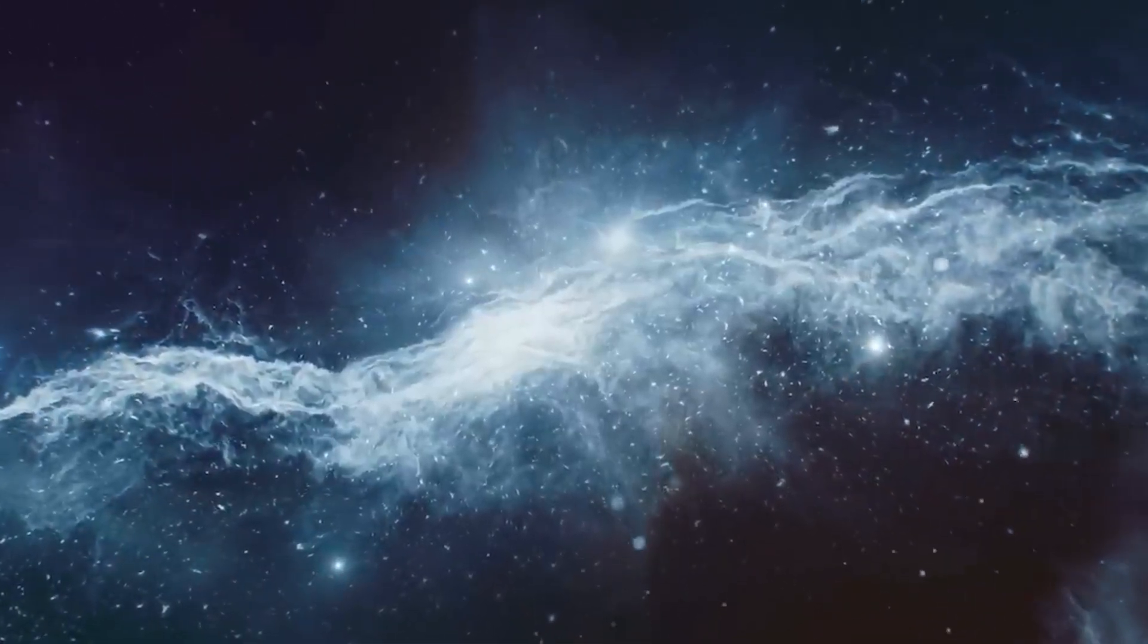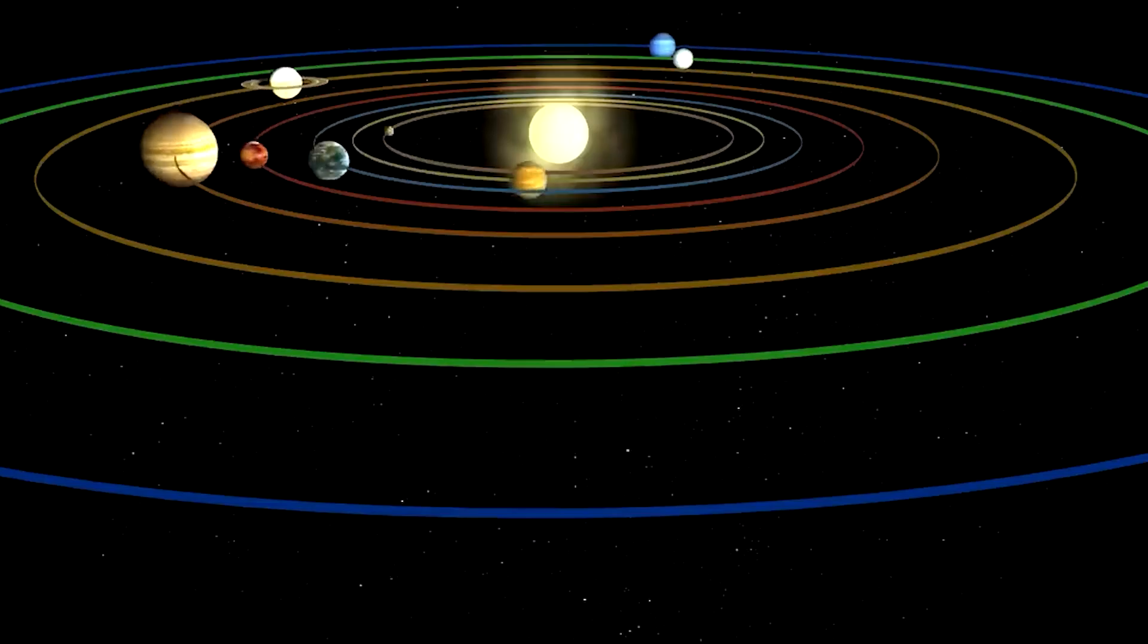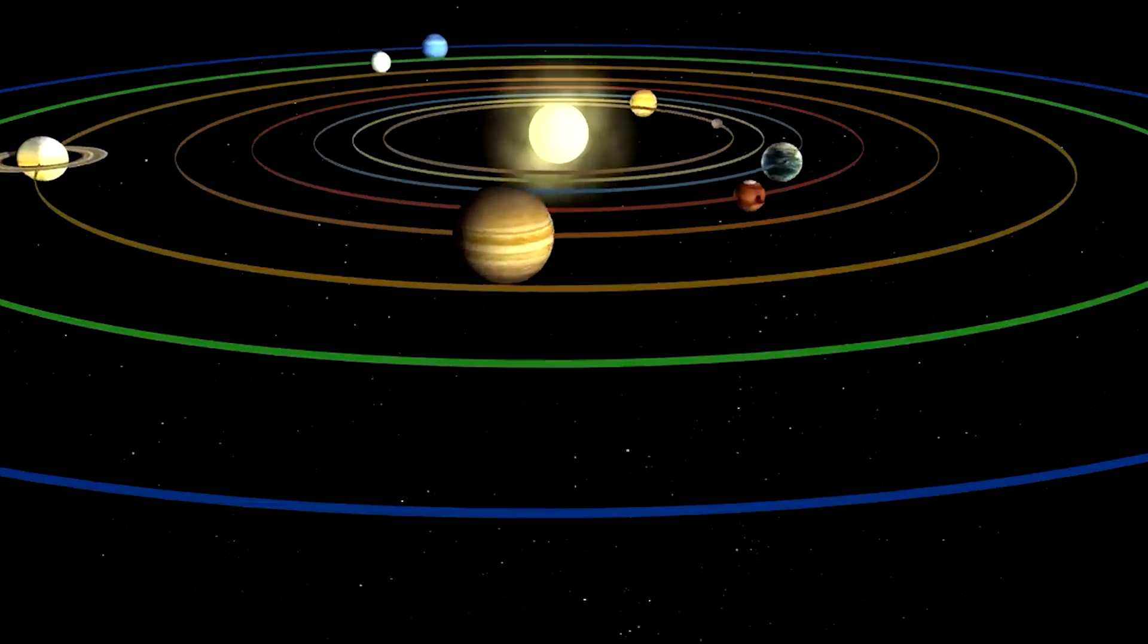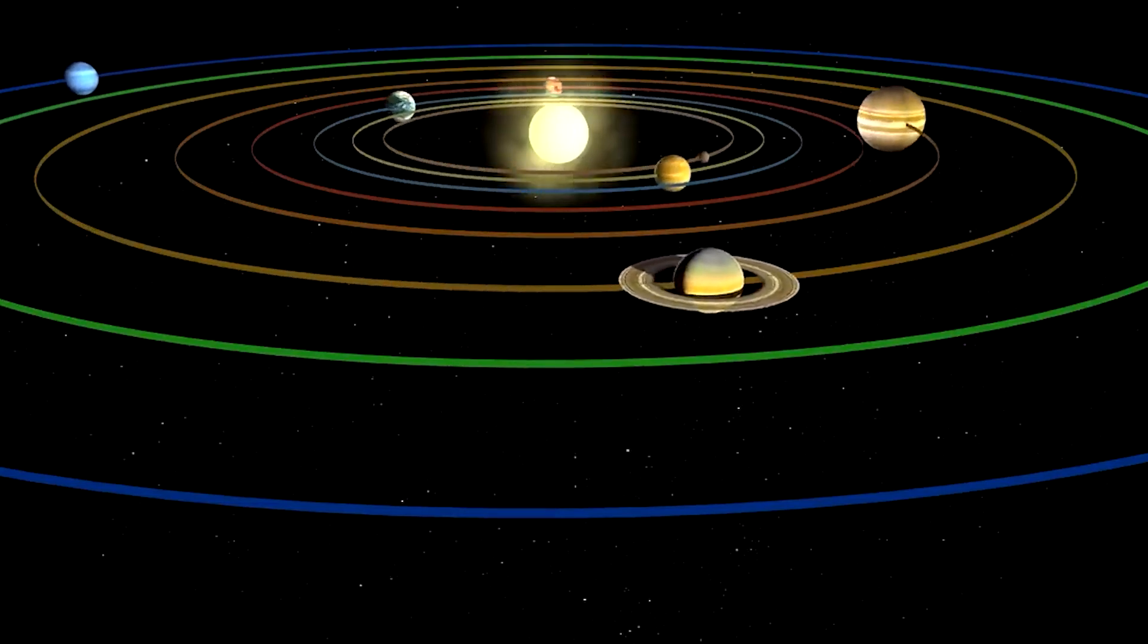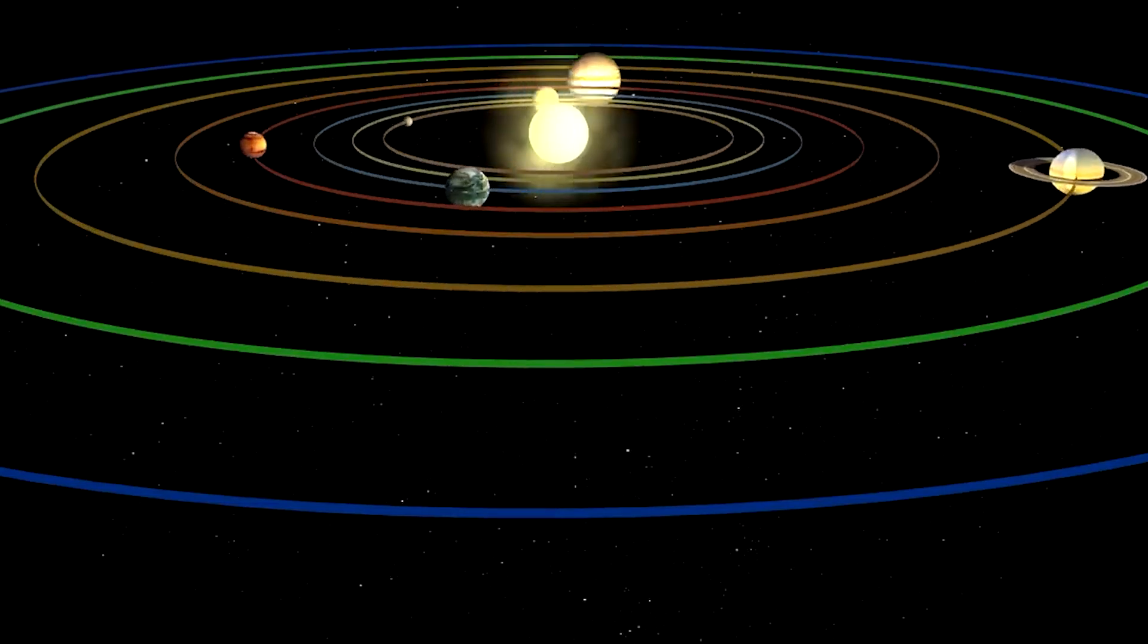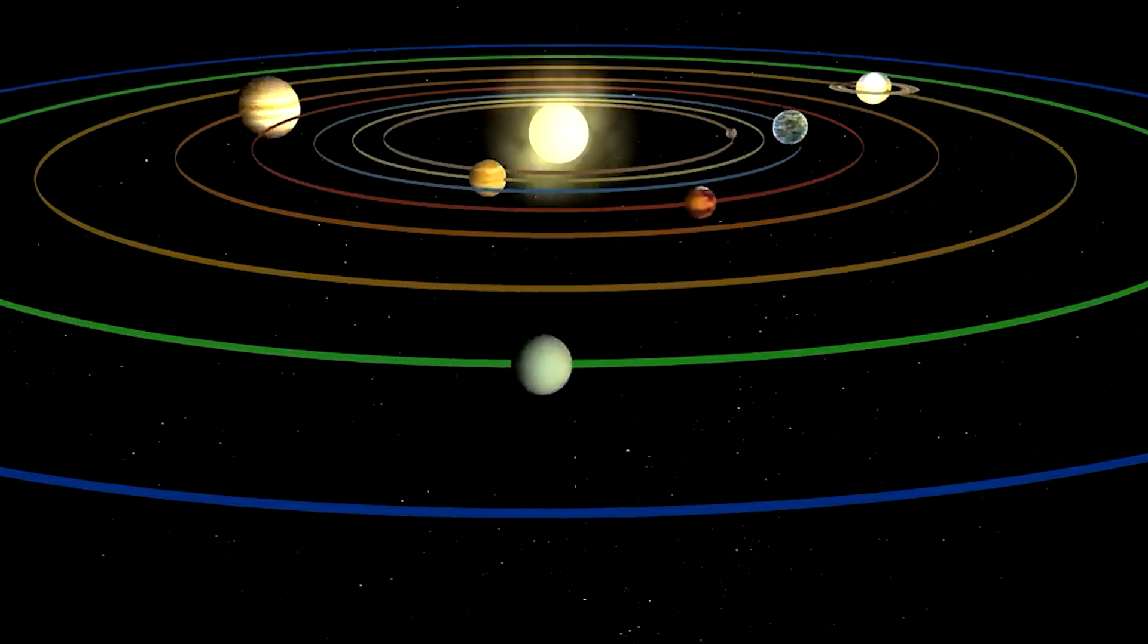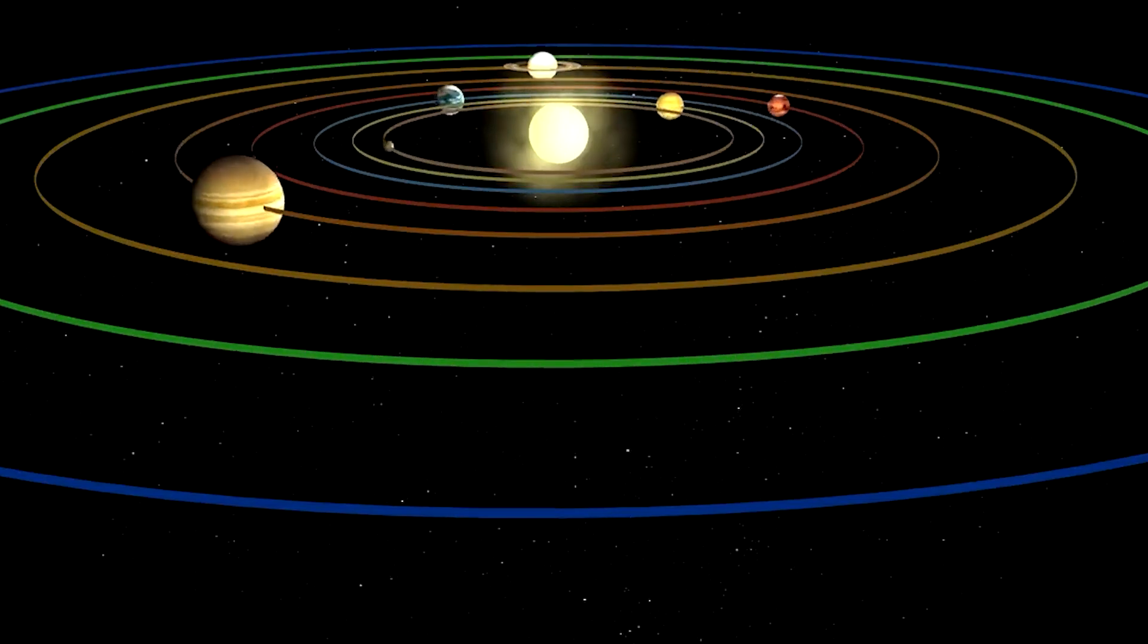Kepler's First Law, the Law of Ellipses, states that planets orbit the sun in elliptical paths, with the sun located at one of the two foci of the ellipse. This means the distance between a planet and the sun constantly changes throughout its orbit.